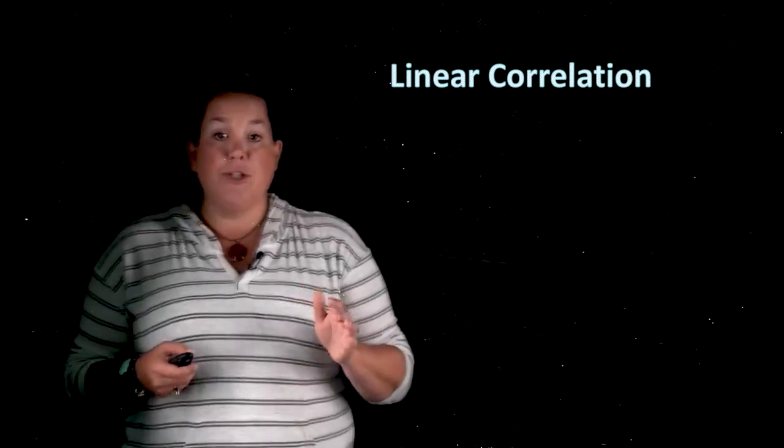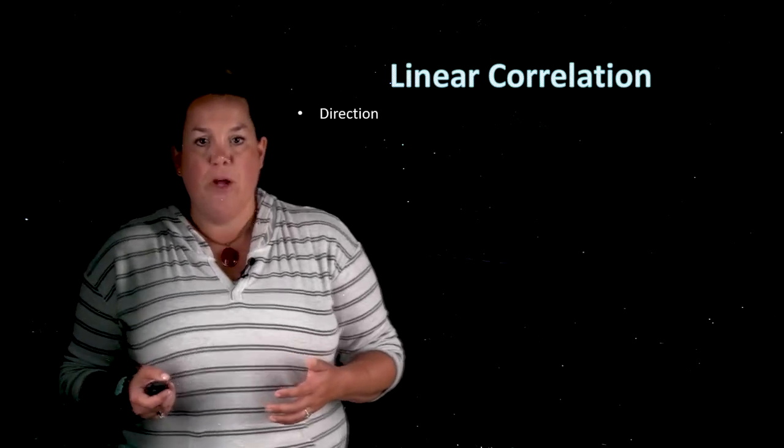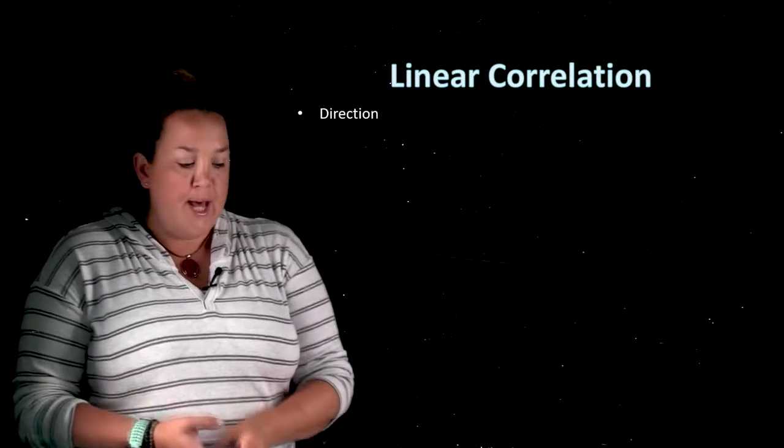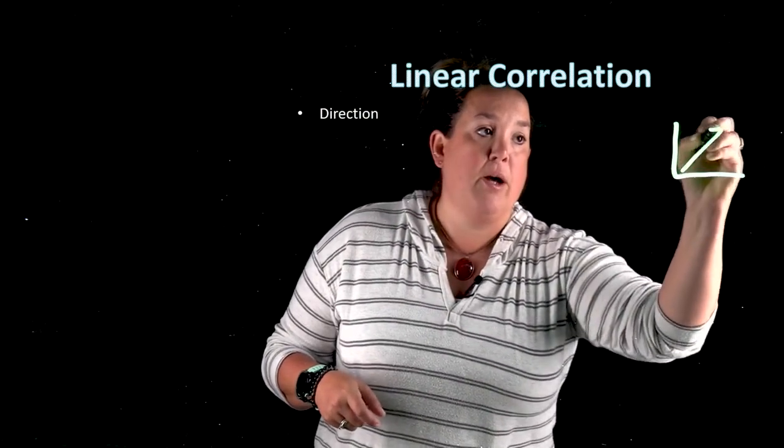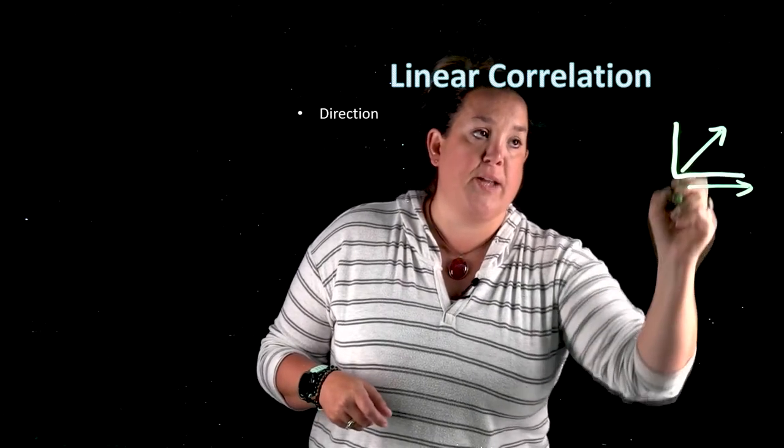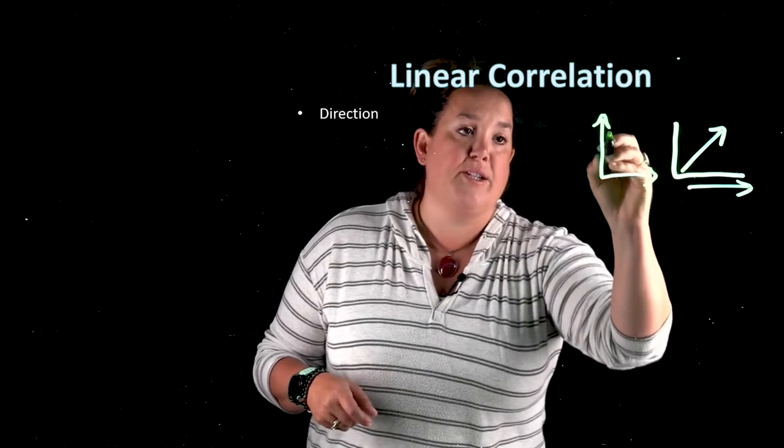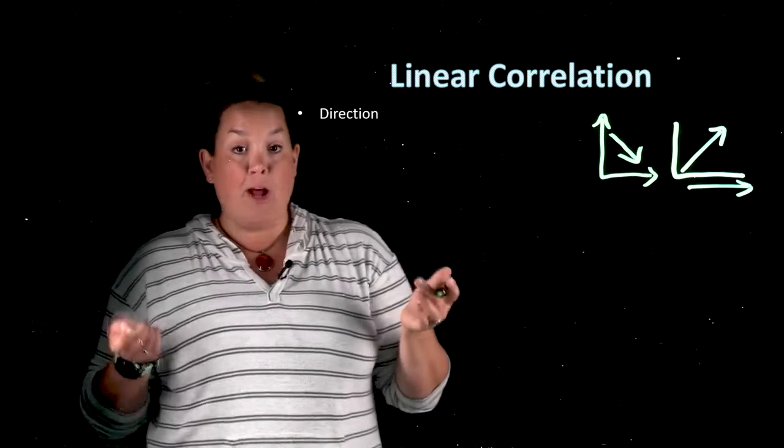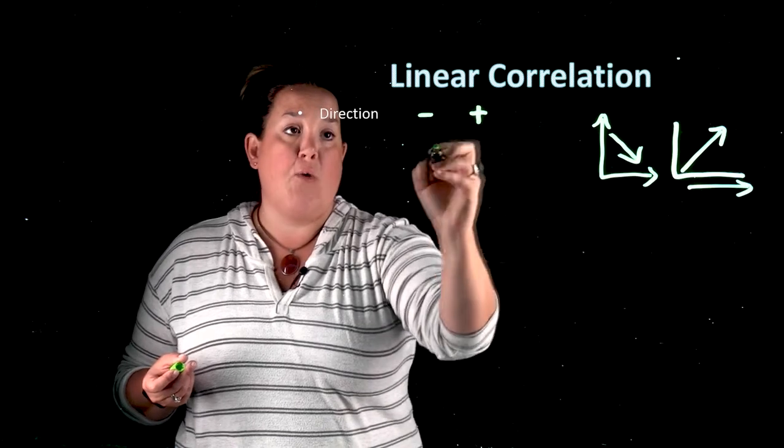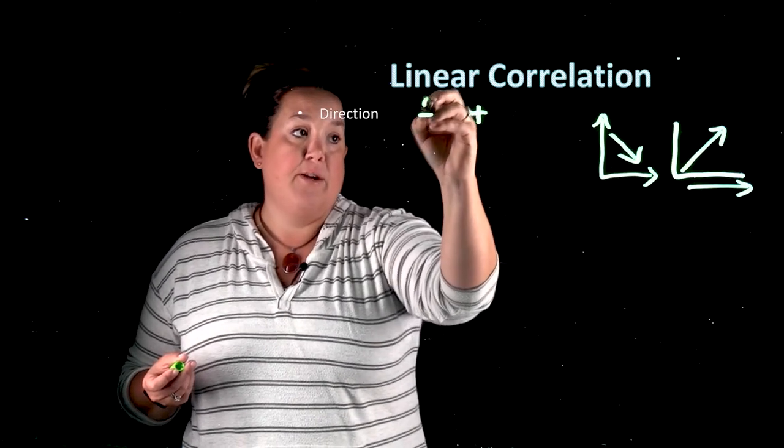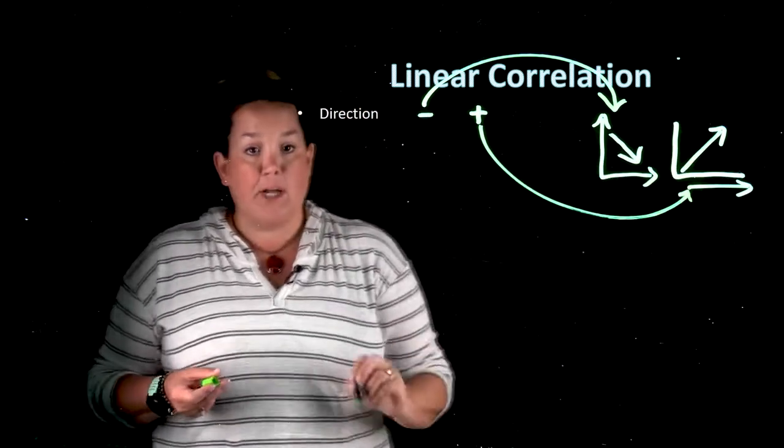When you talk about that correlation coefficient r, it's measuring strength and direction, but here are some of the rules connected to it. The first thing is with the direction, it's going to be telling you if the scatter plot is going up as x increases, so as you increase on the x-axis, or it will tell you if as the x increases, if y is decreasing. That's the direction component. So that will be connected to whether or not the correlation coefficient comes out with a negative or a positive. If it's negative, this is what the scatter plot would be looking like, and if it's positive, you're seeing this type of scatter plot.